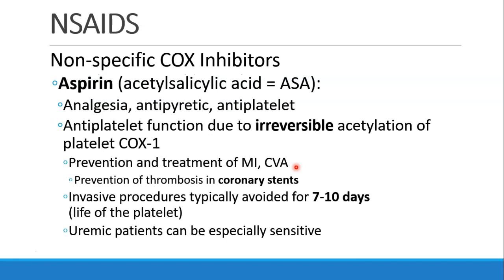Aspirin, often abbreviated ASA for acetylsalicylic acid, is a nonspecific COX inhibitor. It's good for analgesia, it's antipyretic — meaning it blocks fever — and it has antiplatelet function. That antiplatelet effect is due to its irreversible acetylation of the platelet's COX-1 enzymes.